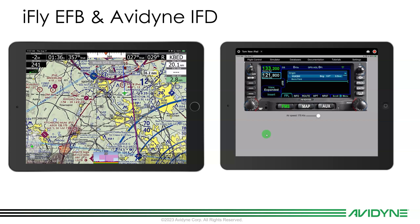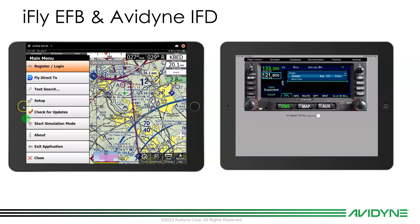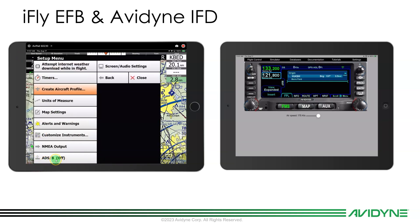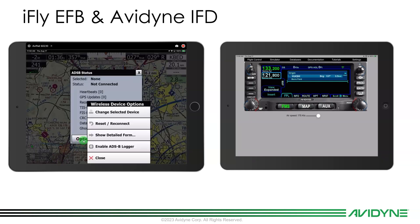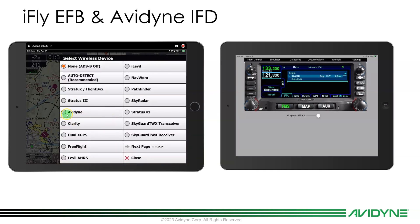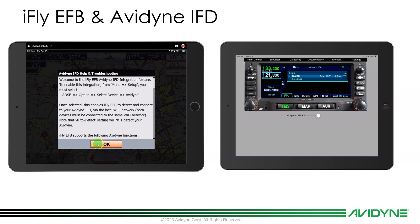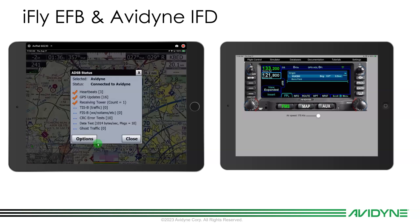The first thing I'm going to do on my iFLY EFB is tell it to connect to the Avidyne. I'm going to go down here to the menu, then up to the Setup page, and then down under ADSB. Click there and select Options. Let's change Selected Device — you'll see Avidyne in the list, so let's select Avidyne, and OK. And you'll see automatically it's already connecting. Let's close that.